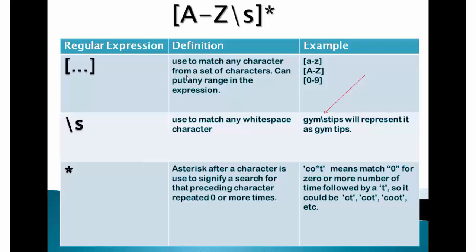These three dots in square brackets means they are used to match any character from a set of characters. You can put any range in the expression like a to z small or in caps or digits from 0 to 9.